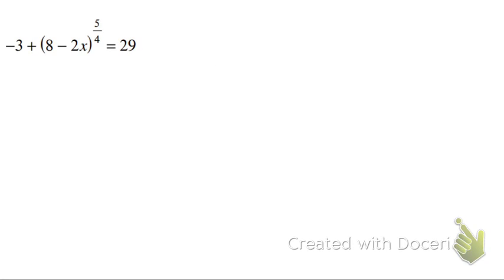Now in this problem we're going to play the same game. I'm going to first start by isolating that term or that value in parentheses that has the exponent. So to start I'm going to add that three to both sides and that's 32.